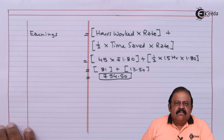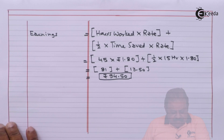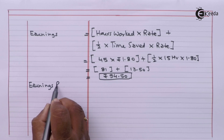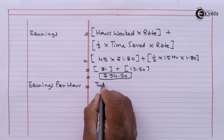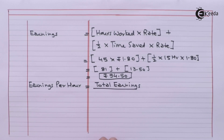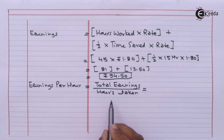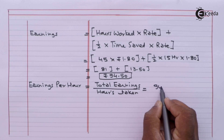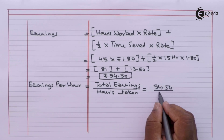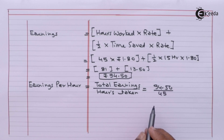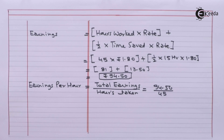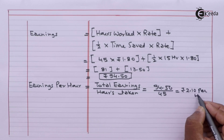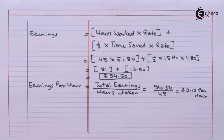We can calculate the effective rate of earnings under the Halsey plan. The formula is total earnings divided by hours taken. Total earnings are rupees 94.50 divided by 45 hours, giving an effective rate of 2 rupees 10 paise per hour.